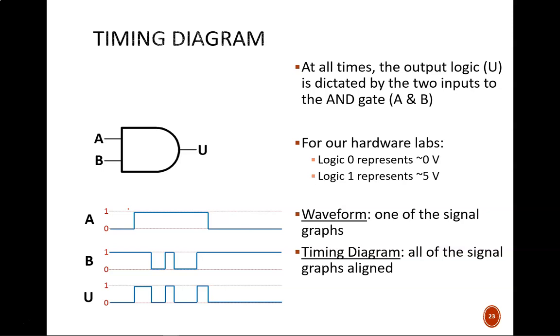But conceptually, we could call one true or high, and we could call zero false or low. Two waveforms show the input signals A and B. These operate independently. You can think of them as light switches that different people are controlling. The last waveform shows the output signal U. This is a function of the input signals passed through the logic gate. You can think of this as the light bulb that may be on or off.